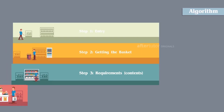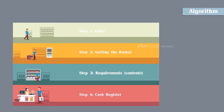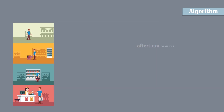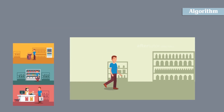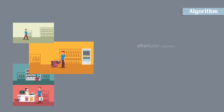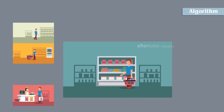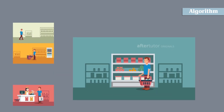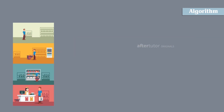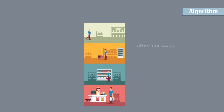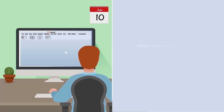Algorithms are a set of instructions which we follow to accomplish certain tasks. For example, while you are shopping in a supermarket, you will grab the basket, fill it up with the contents you require, and pay out the cash at the cash register. This whole process is an algorithm.